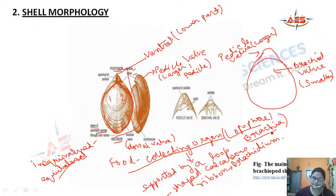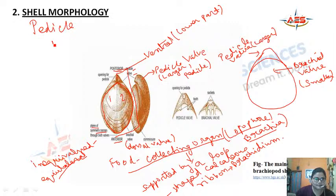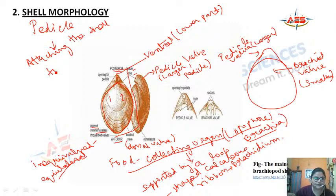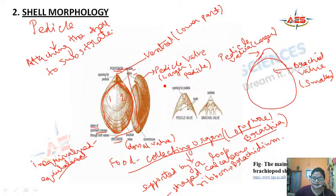In the pedicle valve there is a circular opening through which the pedicle comes out. The pedicle is used for attaching the shell to the substrate. The pedicle valve also has teeth, and the adjoining brachial valve has sockets.